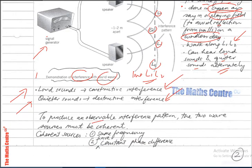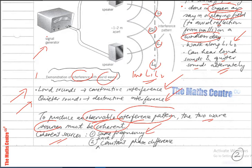To produce an observable interference pattern, the two wave sources must be coherent. Coherent wave sources vibrate at the same frequency and have a constant phase difference.